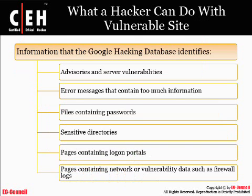Some of the information that the Google Hacking Database identifies includes advisories and server vulnerabilities, error messages that contain too much information, files containing passwords, sensitive directories, pages containing logon portals, and pages containing network or vulnerability data such as firewall logs.